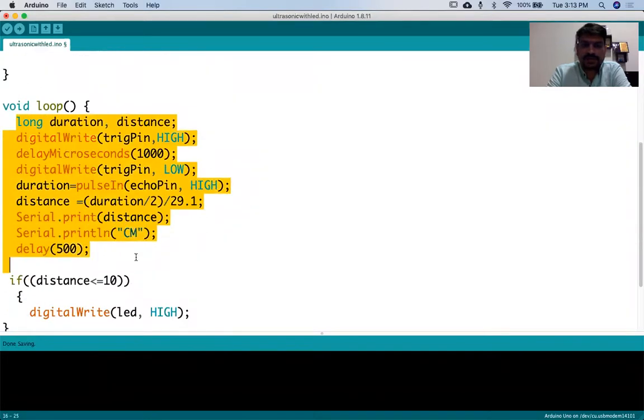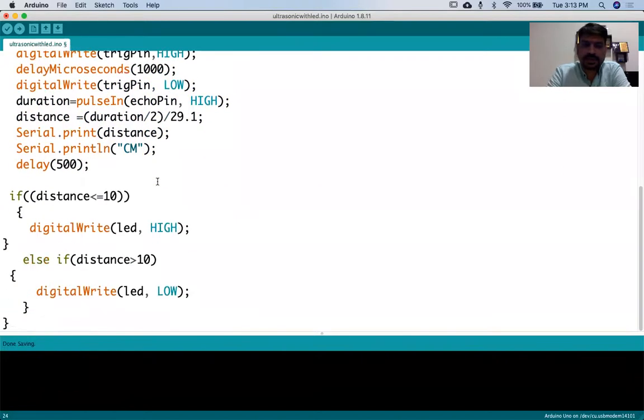This particular part is the same as the previous one. The formula and everything is same. Now here we have the logic: if the distance is less than or equal to 10, then this LED will glow or LED will be high. If the distance is more than 10, the LED will be low.